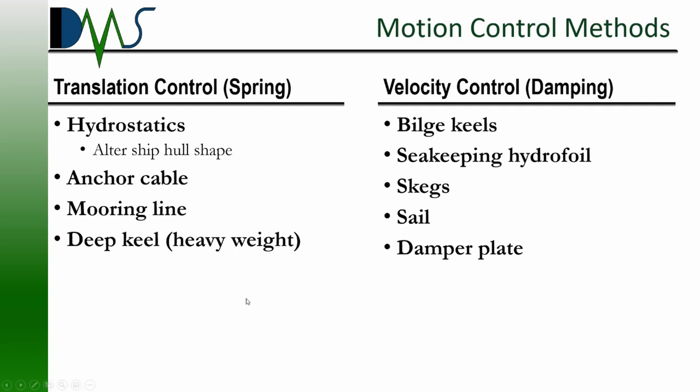It doesn't always have to be water — sails are another example of a damping component. A traditional sailing vessel with a hundred-meter-tall mast and massive sails rolling from side to side, interacting with the air, creates a very large damping component. That's still fluid structure interaction — the interaction of our ship with the air. Generally though we use underwater components because the water is a lot denser and we get a lot more return for our effort.